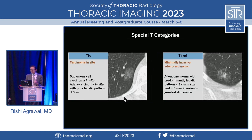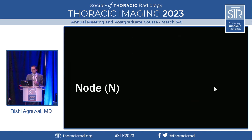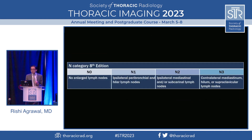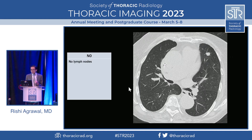Carcinoma in situ and minimally invasive adenocarcinoma have specialty categories: TIS tends to be a purely ground glass nodule, and T1MI tends to be a nodule with a small solid component. Nodal staging already had a detailed discussion, so that section will be skipped here.